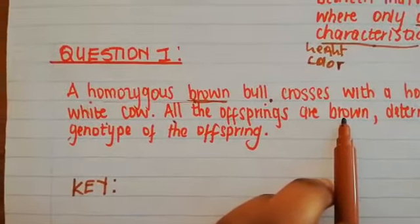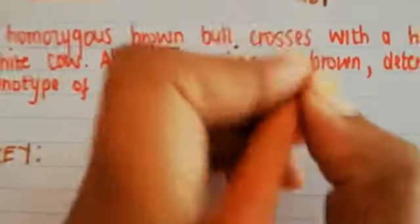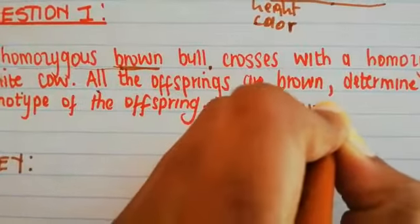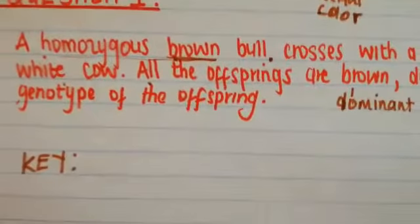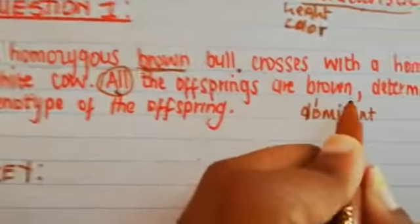What does that imply? It means brown is dominant, right? The reason why we're saying that is because all of the offsprings are said to be brown.